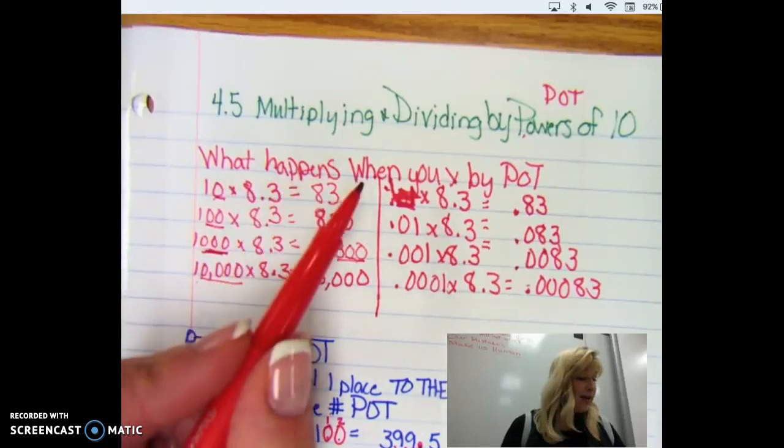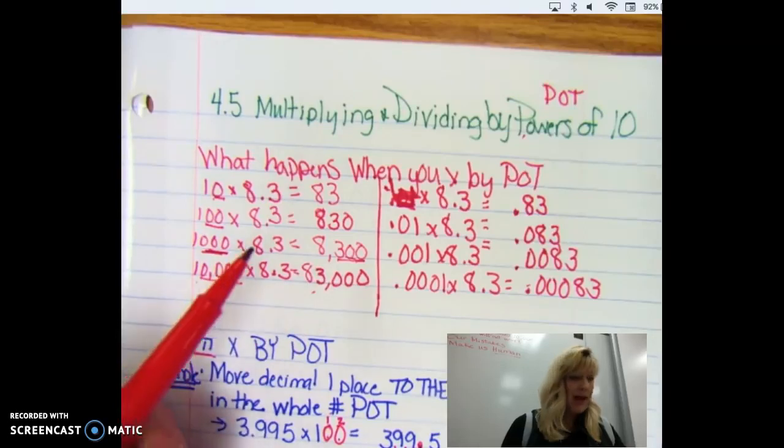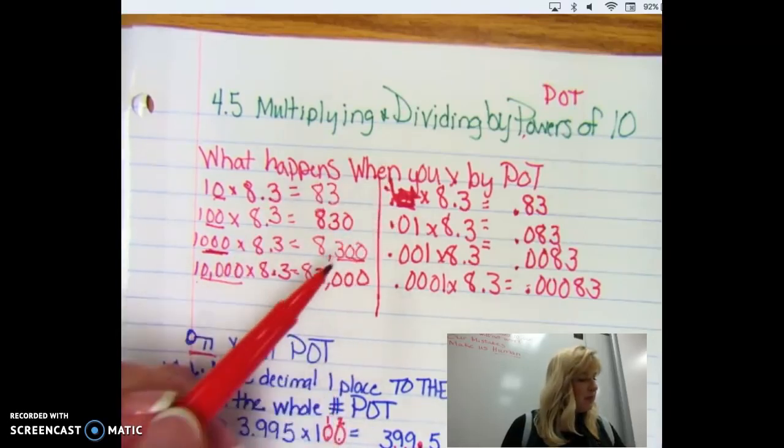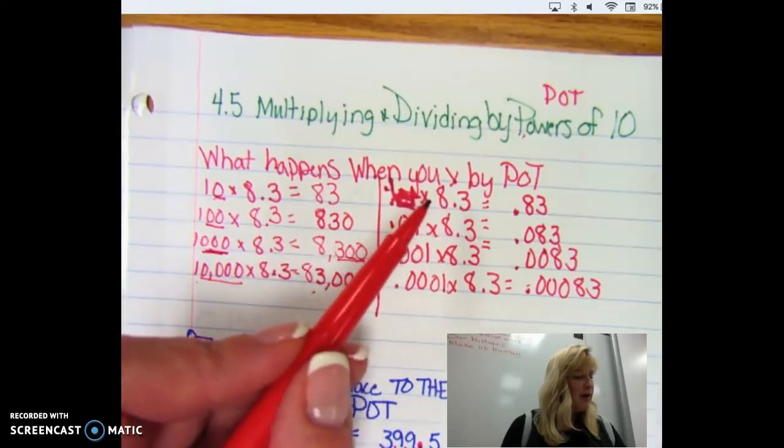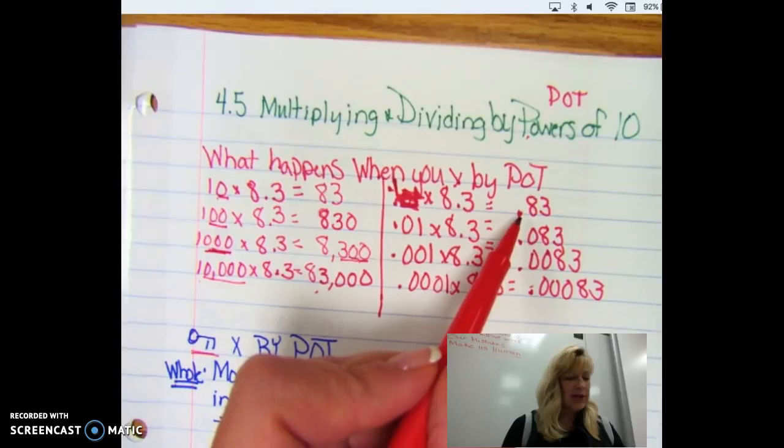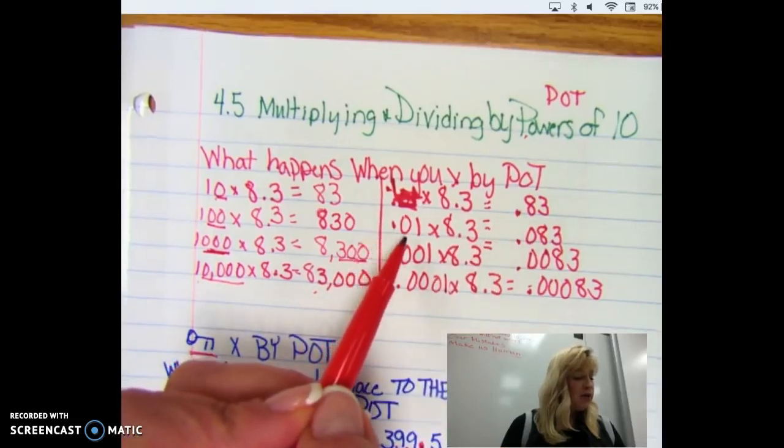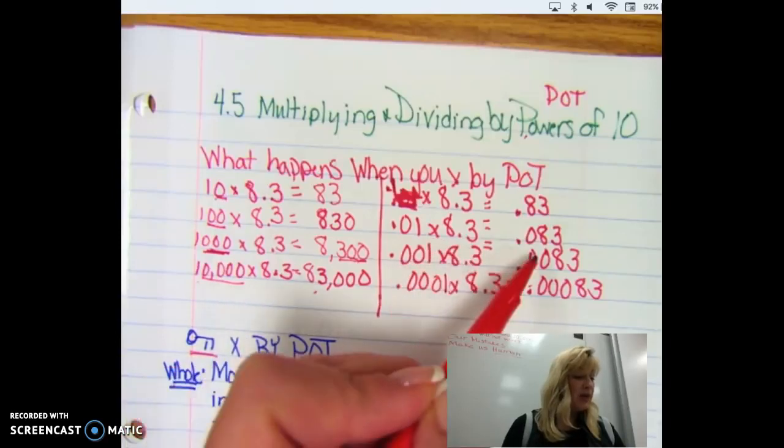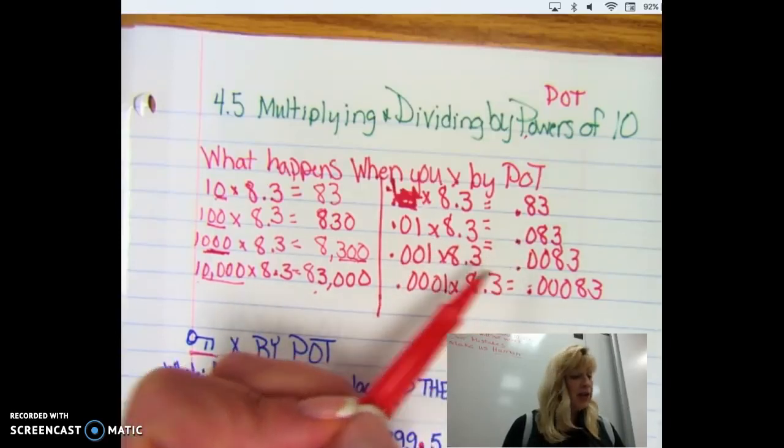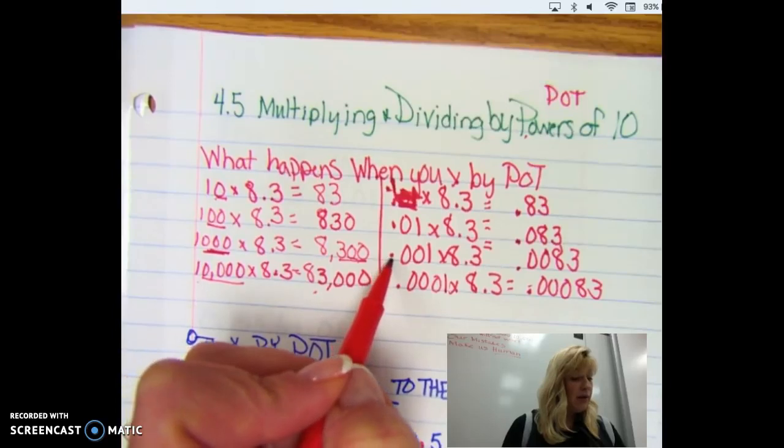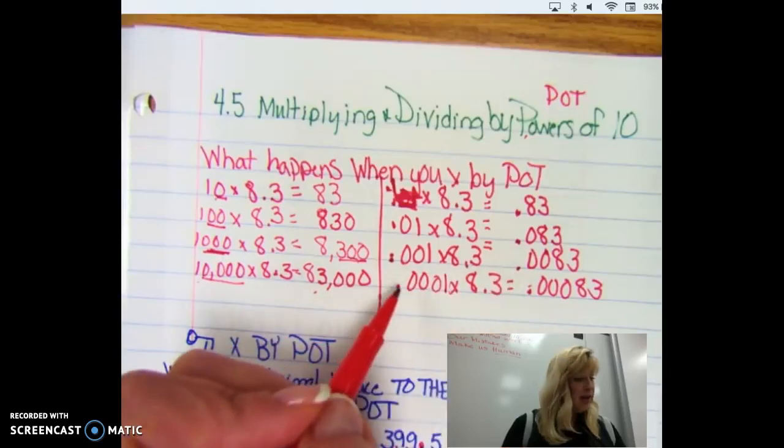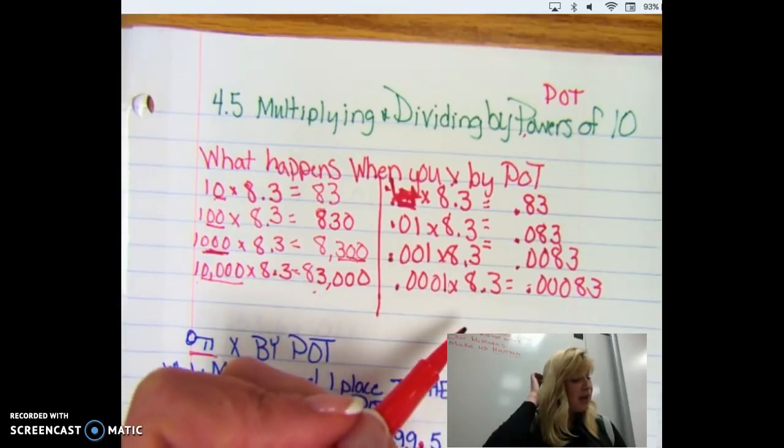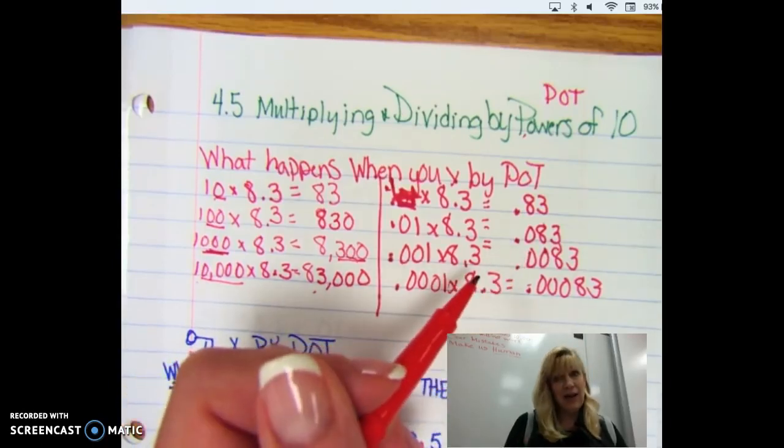Now when we divide you're going to see the opposite pattern happen. So if we do 0.1 times 8.3 we're going to get 0.83. If we do 0.01 times 8.3 we are going to get 0.083. 0.001 times 8.3 is 0.0083, and 0.0001 times 8.3 is 0.00083.